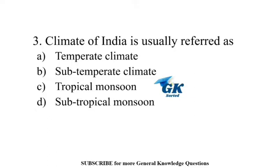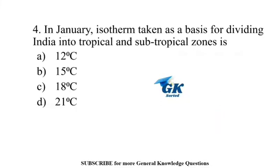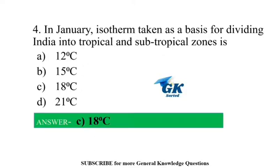The climate of India is usually referred to as Tropical monsoon. In January, the isotherm taken as a basis for dividing India into tropical and subtropical zones is 18 degrees centigrade.